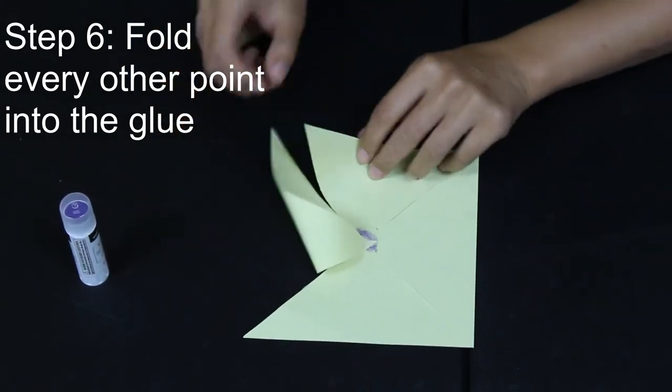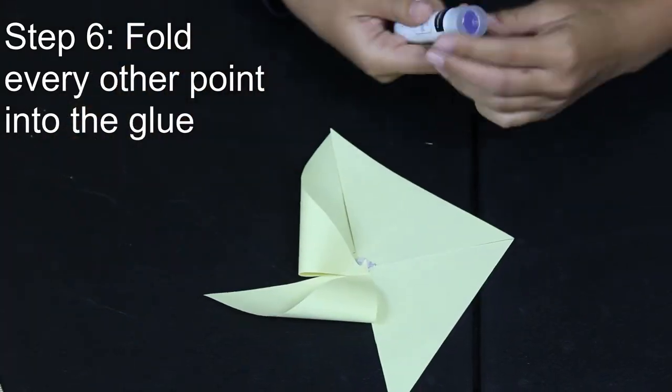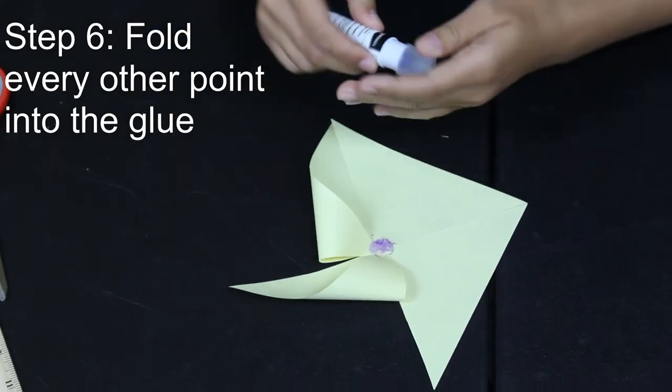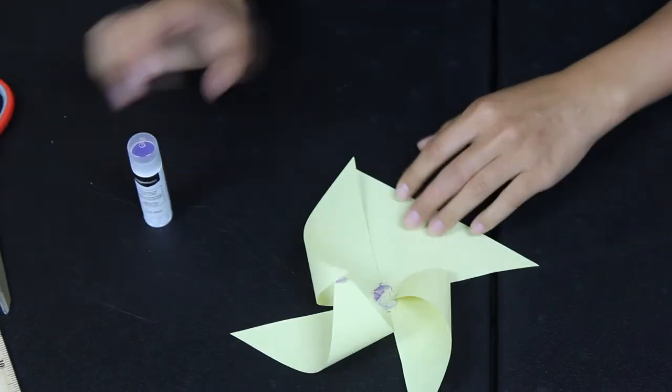We're going to fold every other point. Count off one, two and fold the next point, the one that's two. Add more glue to make sure that it keeps sticking but remember it's every other one.